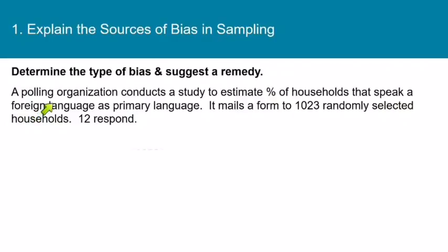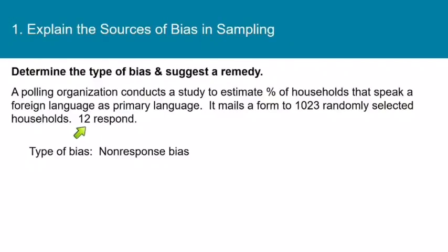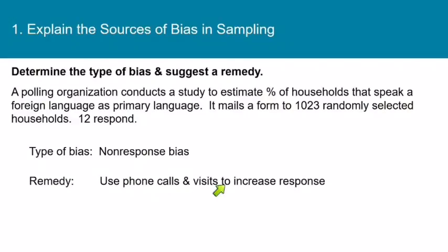Fourth: a polling organization conducts a study to estimate the percent of households that speak a foreign language as a primary language. It mails a form to 1,023 randomly selected households and only 12 respond. This is non-response bias — only 12 out of 1,023 is not nearly enough. The remedy is to send people to these houses or use phone calls to increase response, since those who speak a foreign language as their primary language may not speak English and may discard a mailed card that doesn't seem like essential business.